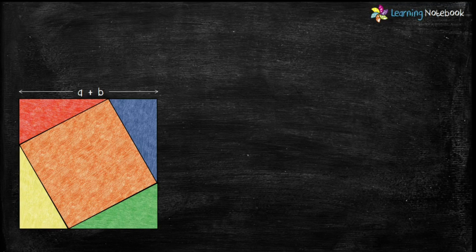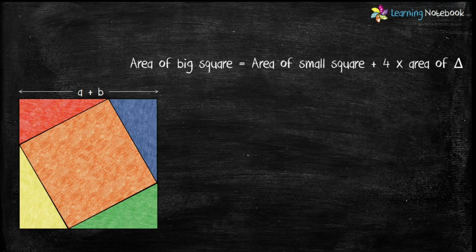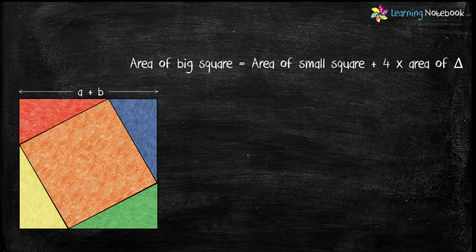Students, we can write the area of the big square as the sum of the area of the small square and area of four triangles. Now area of big square will be side square, which equals (a + b)².